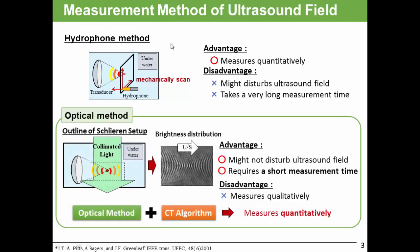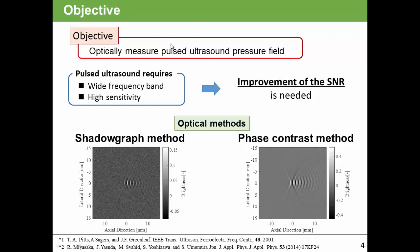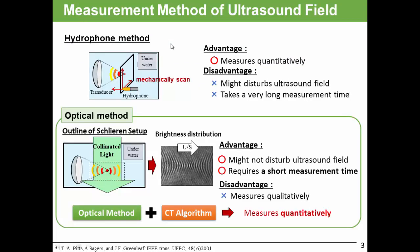Let me explain the measurement method of ultrasound field. The conventional way to measure the ultrasound field is using hydrophone method. The advantage of hydrophone method is to measure quantitatively. However, hydrophone method might disturb ultrasound field and takes a very long measurement time.